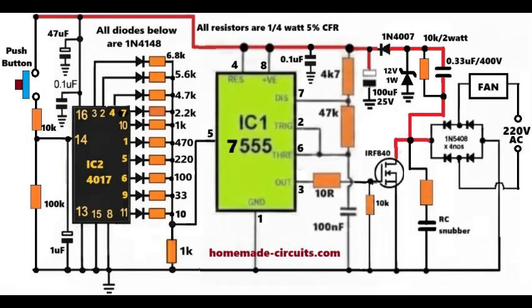Now comes the power stage using the IRF840 MOSFET. Here is an important point. The AC fan supply is first bridge rectified using 4 1N5408 diodes. The MOSFET switches the DC side, not the AC directly.